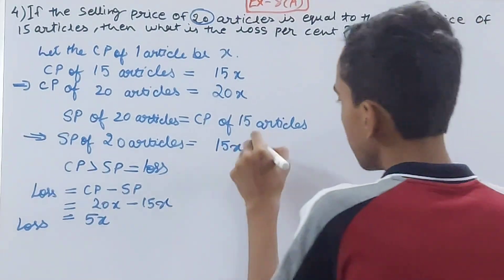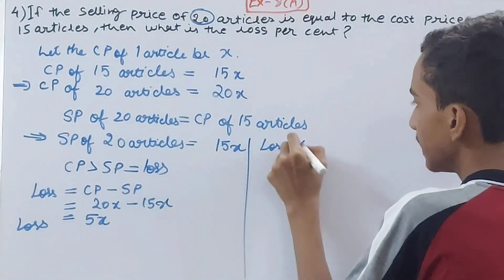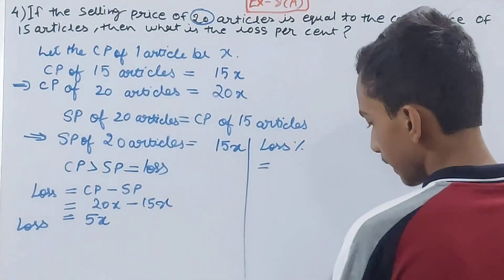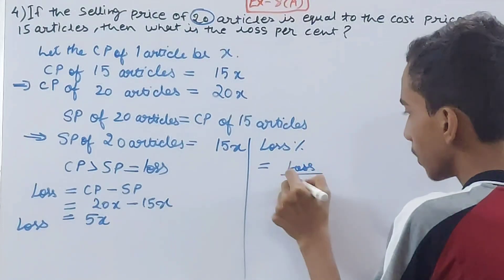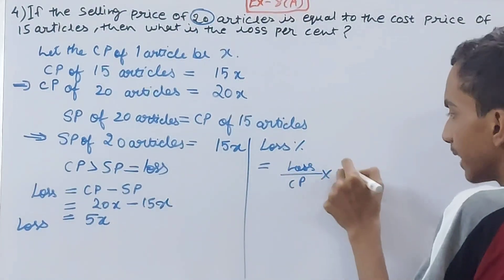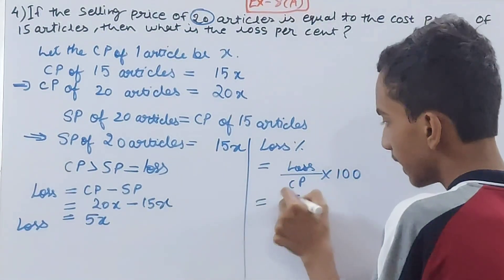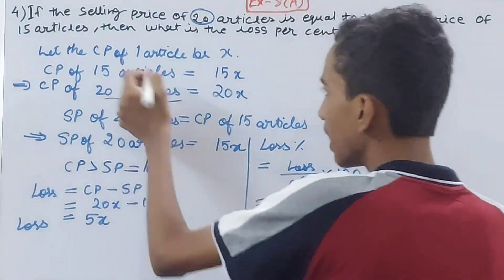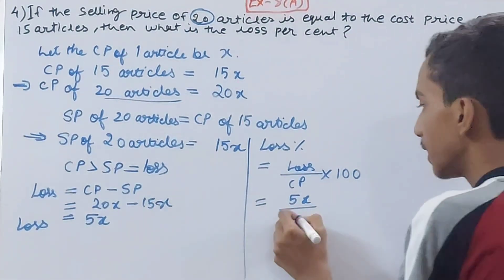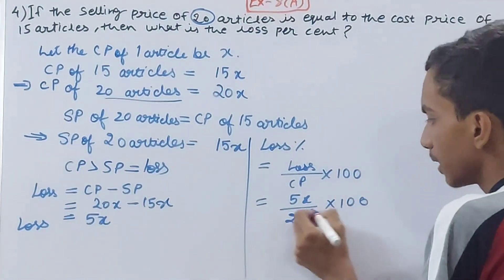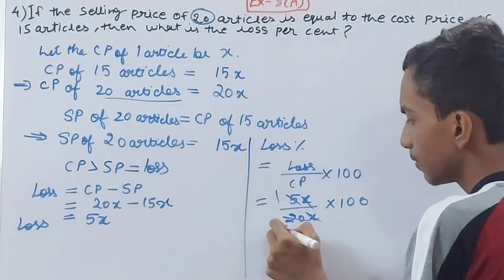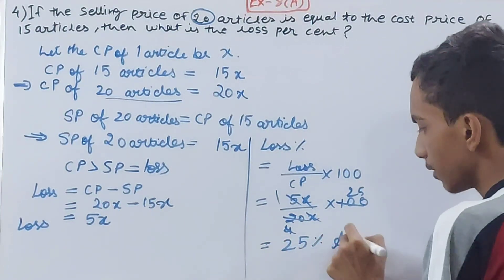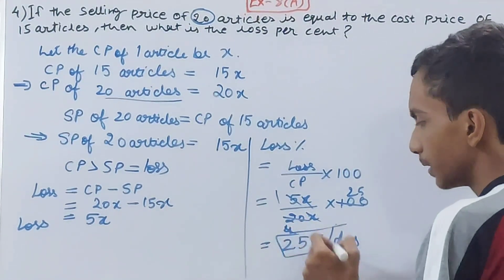Now we will also calculate the loss percent. The formula says: loss divided by cost price, multiplied by 100. The loss we calculated is 5x, and cost price of 20 articles is 20x. So loss percent = (5x / 20x) × 100. The x cancels, and this simplifies to 25. So the final answer is 25% loss percent.